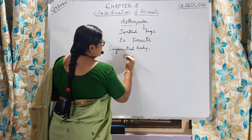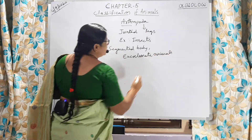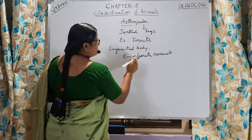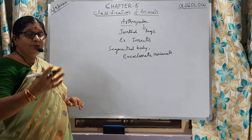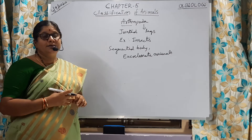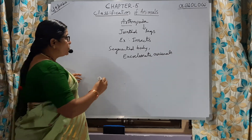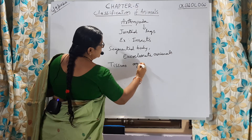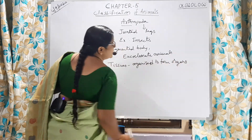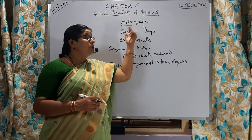They are eucoelomate animals — a true body cavity is present in this group of organisms, just as we discussed earlier. Evolutionarily, we observe still further development. Well-defined differentiation is observed, resulting in true organs. Real organs are observed in this group of organisms.